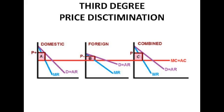Profit tends to increase with price discrimination — that's why firms do it. Firms don't tend to have much incentive to sell at a lower price just to be nice, because firms are all about profit. Selling at a lower price basically attracts customers that might otherwise not have been able to afford the good or service.